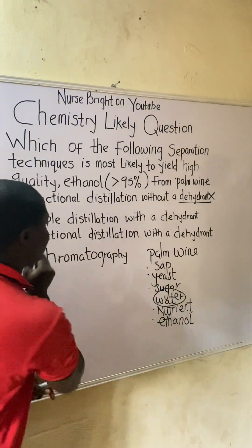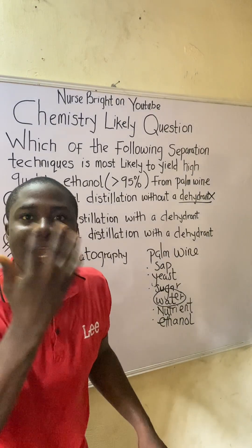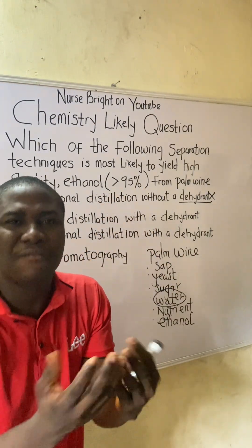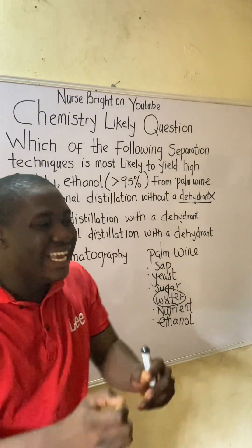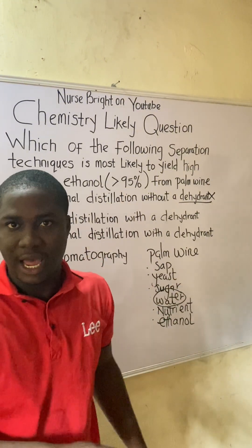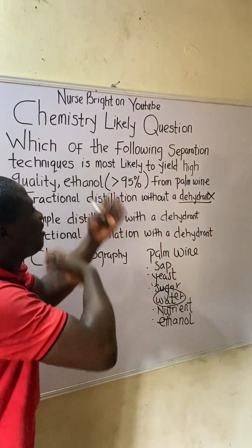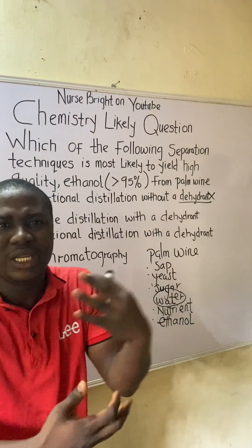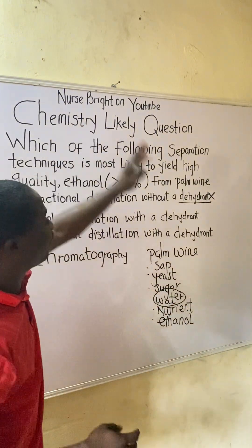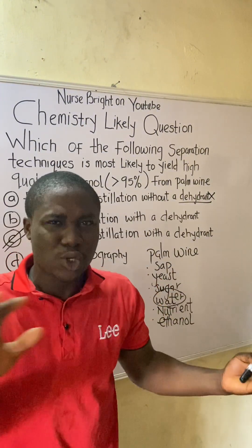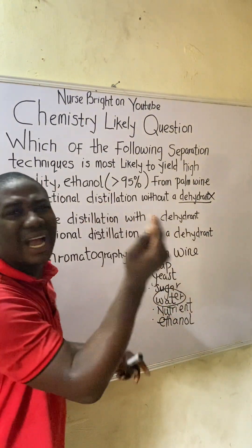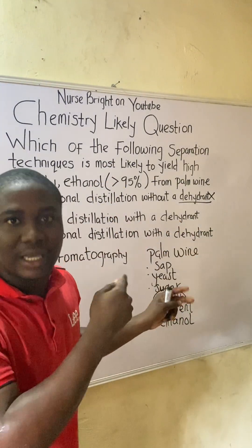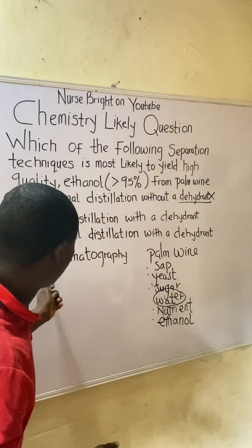Option D is chromatography, and it can never work in this process. Chromatography deals with the difference in the rate of migration of substances and is used for separation of colors. There is no rate of migration or colors involved here, so chromatography cannot yield a high percentage of ethanol from palm wine.